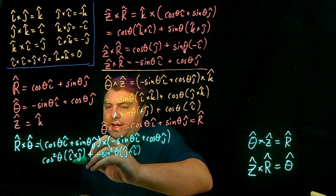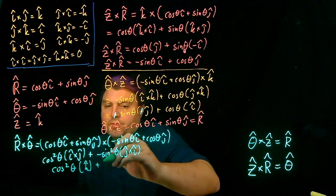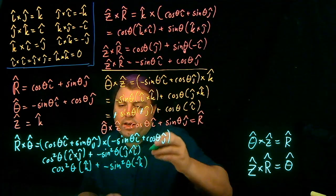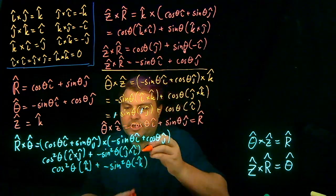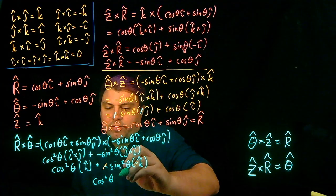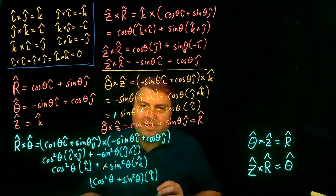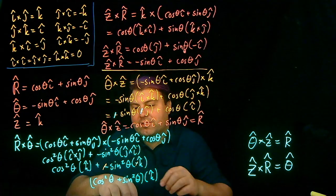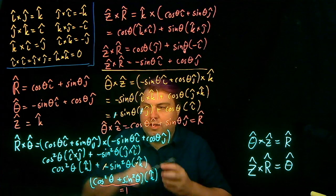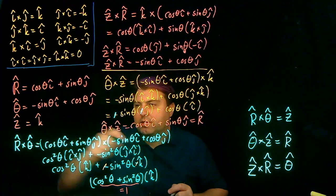ĵ × ĵ is zero. î × ĵ = K̂, so we have cos²θ K̂. ĵ × î = −K̂, so we have −sin²θ · (−K̂). The minus signs cancel, and factoring out K̂ gives (cos²θ + sin²θ) K̂. By the trig identity cos²θ + sin²θ = 1, so R̂ × θ̂ = Ẑ, which is also K̂.